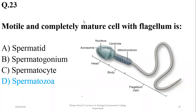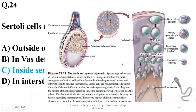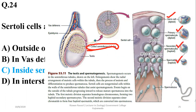Number twenty-four: Sertoli cells are found inside seminiferous tubules and are responsible for the production of liquid medium. As you can observe in the cross-section of seminiferous tubules, you can see certain types of cells such as germ cells, primary spermatocytes, secondary spermatocytes, spermatids, and mature cells. Certain cells responsible for secretion of liquid medium for the sperms when they are within the testes are known as Sertoli cells, so the right option will be charlie — the location is inside seminiferous tubules.